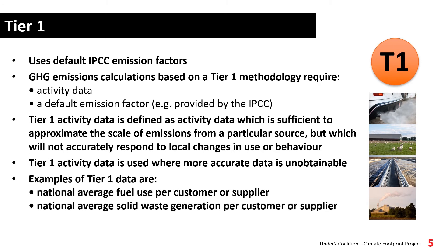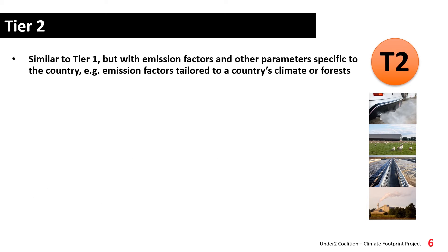Examples of tier 1 data include national average fuel use per customer or supplier and national average solid waste generation per customer or supplier. A tier 2 approach will be similar to tier 1; however, it will use emission factors and other parameters specific to the country or region — for example, where it has been tailored to a country's climate or forests.